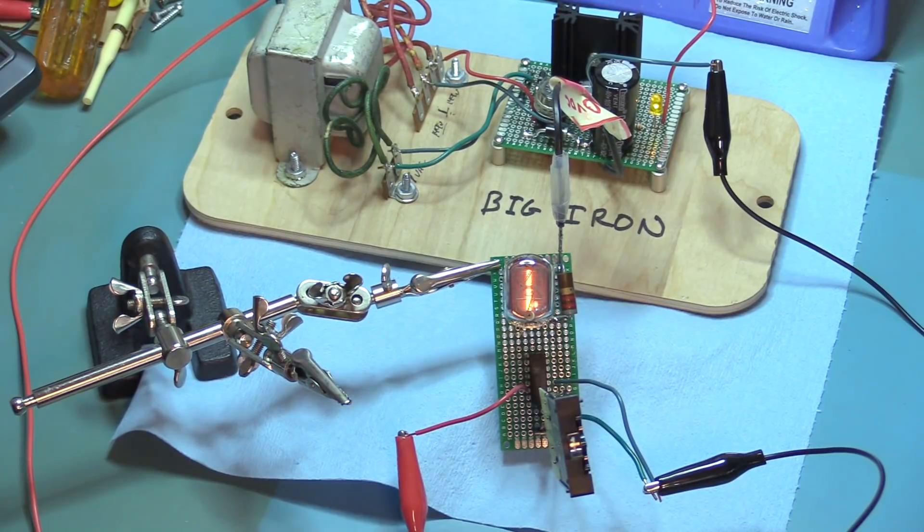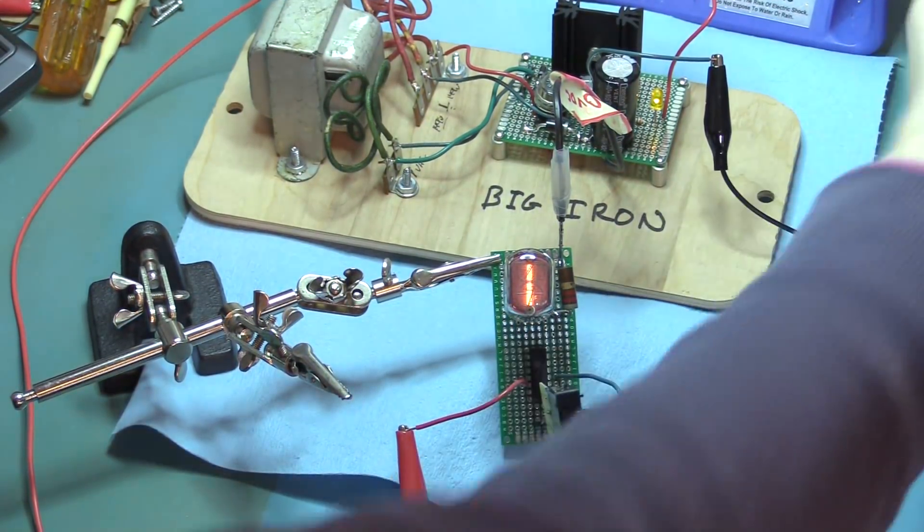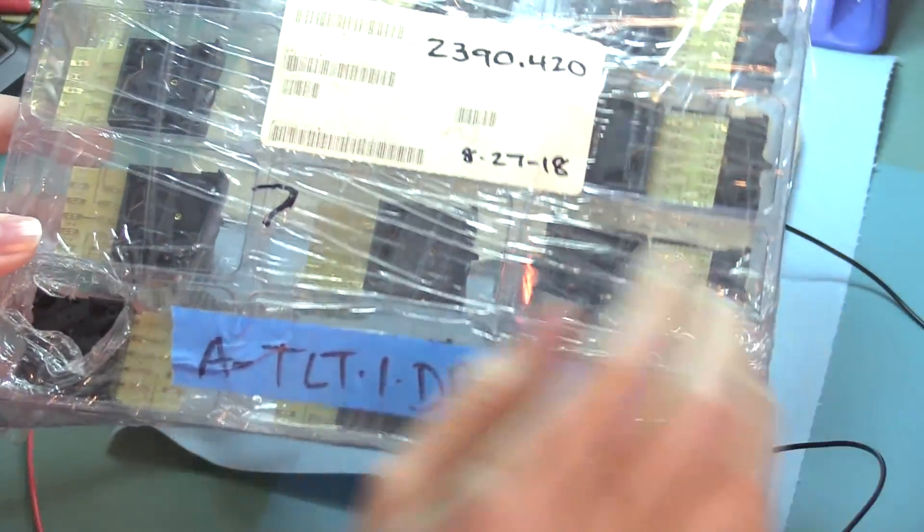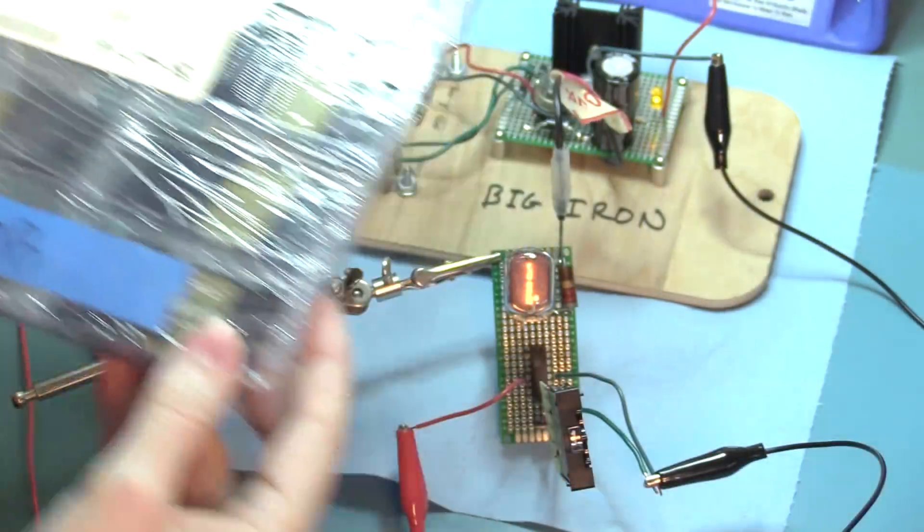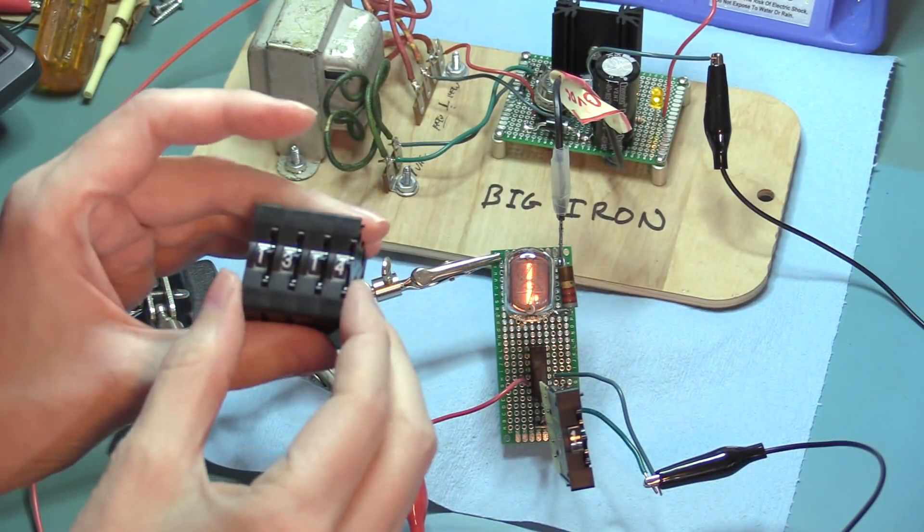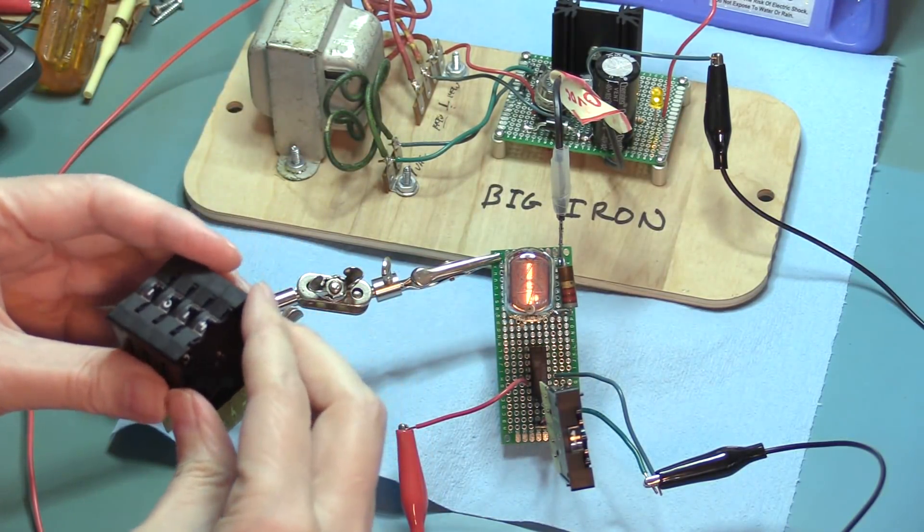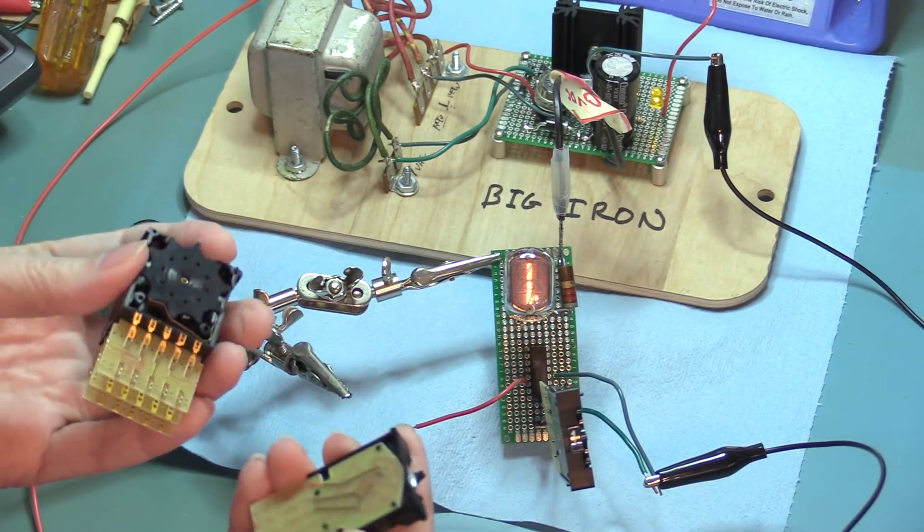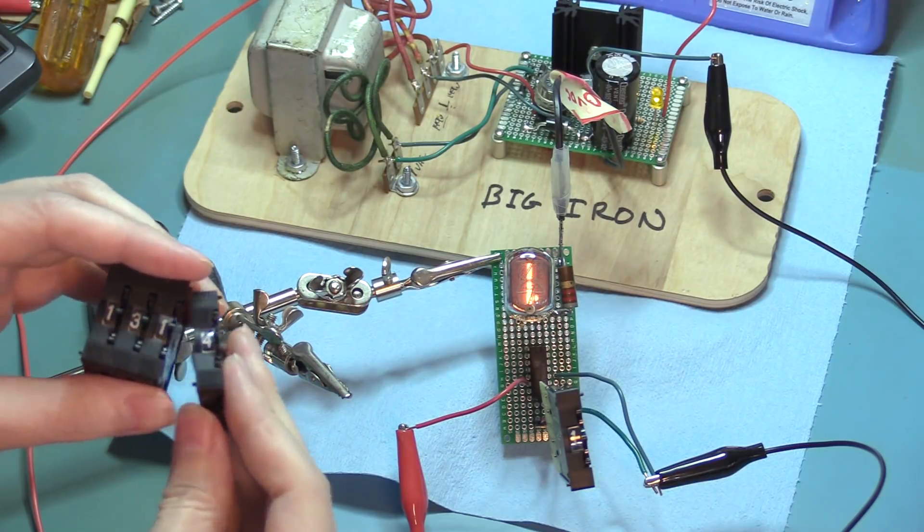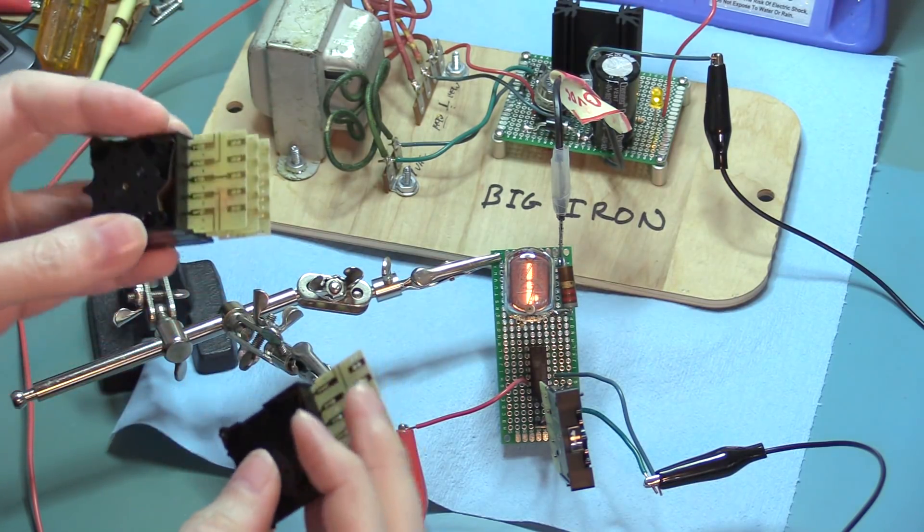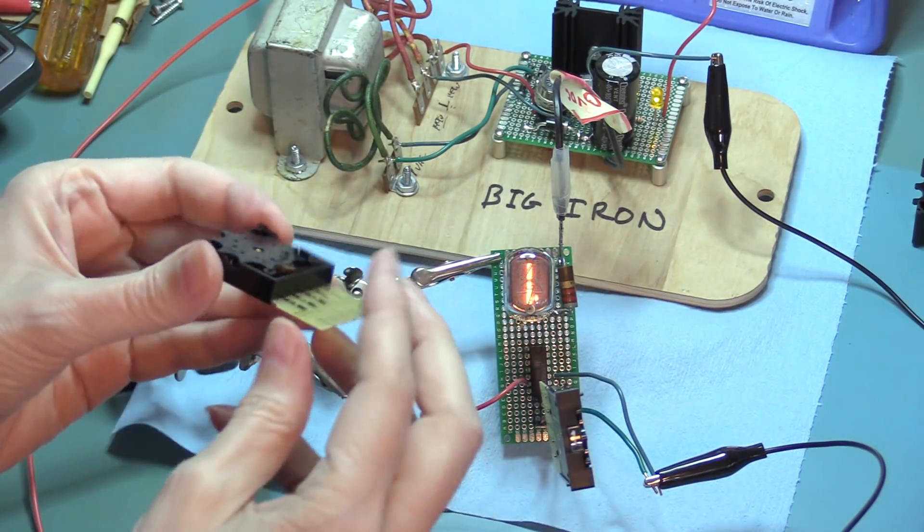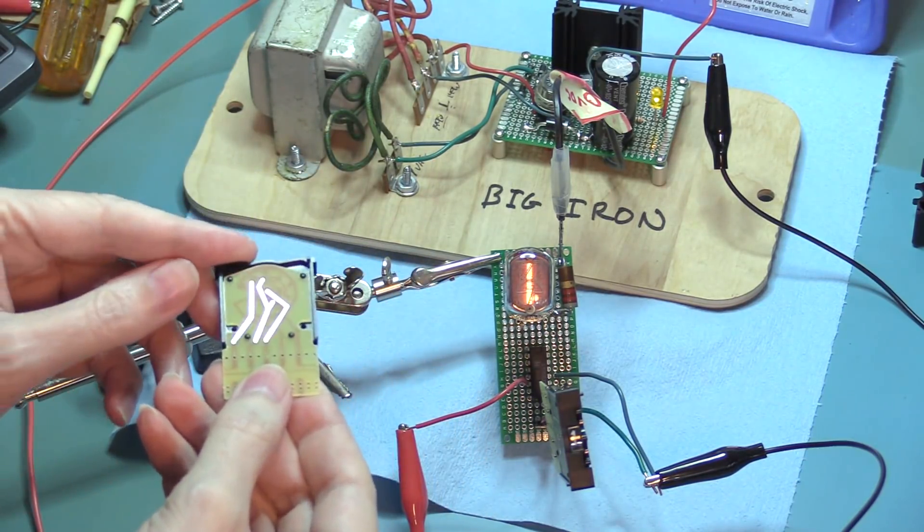I've got a whole tray of these, surplus. The great thing about these thumbwheel BCD switches is that they still make them. It's really unusual to have this very 1950s mechanical type of memory or input that's still manufactured. These are C and K's, but I bought them surplus.